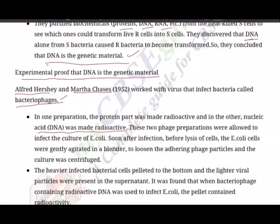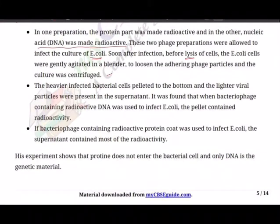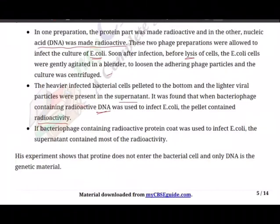These two phage preparations were allowed to infect cultures of E. coli. Soon after infection, before lysis (death of cells), the E. coli cells were gently agitated in a blender to loosen the adhering phage particles, and the culture was centrifuged. The heavier infected bacterial cells pelleted to the bottom, and the lighter viral particles remained in the supernatant. When radioactive-DNA phage was used, the pellet contained radioactivity. When radioactive-protein phage was used, the supernatant contained most of the radioactivity.